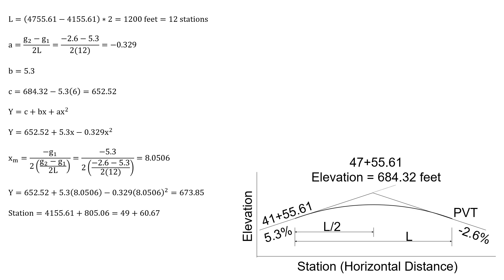We want to know where that's located, so we're going to take our PVC station, add to it X sub m, and get a station of 49 plus 60.67. So the complete answer to this problem is that the high point occurs at station 49 plus 60.67 at an elevation of 673.85 feet.